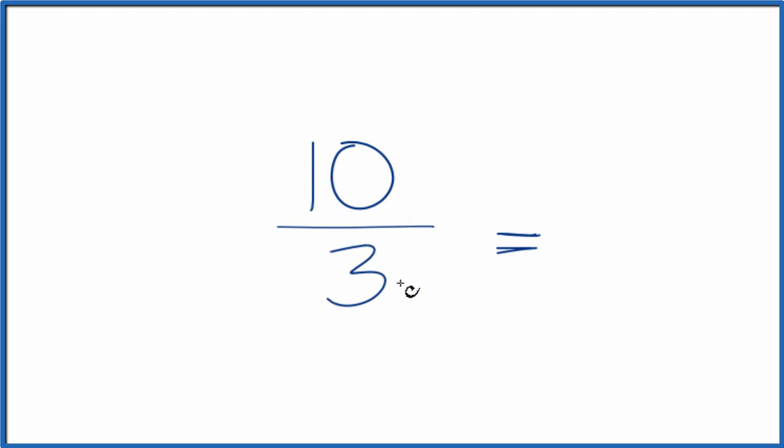So the fraction 10 thirds is already reduced or simplified down to its lowest terms. You could convert this to a mixed number. Right now it's an improper fraction because the numerator is larger than the denominator.